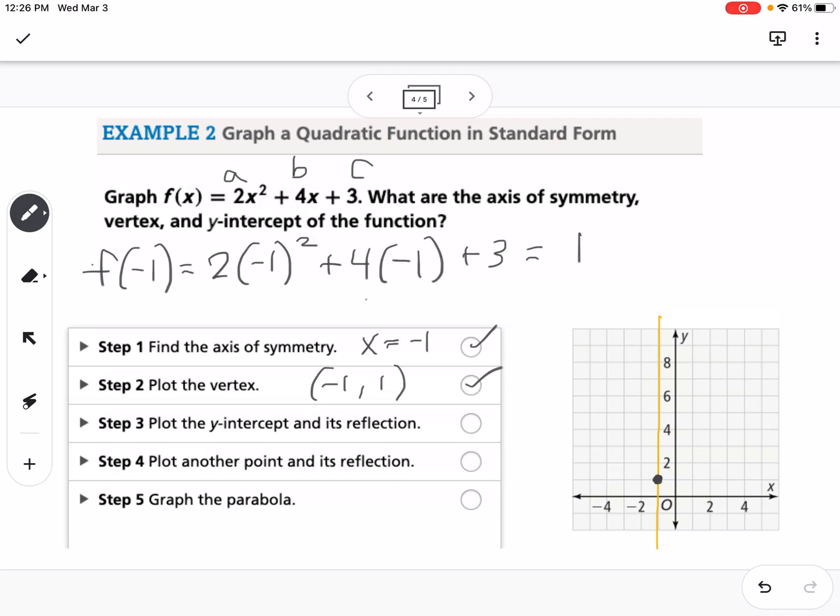Step 3 says to plot the y-intercept and its reflection. If I go back up to the equation, my y-intercept is at 3, and then I can also plot its reflection because I know that I have my axis of symmetry right there.